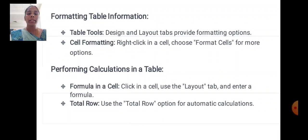Performing calculations in a table. Formula in a cell: click a cell, use the layout tab and enter your formula. Total row: use the total row option for automatic calculations.